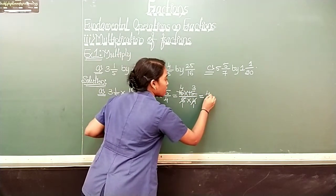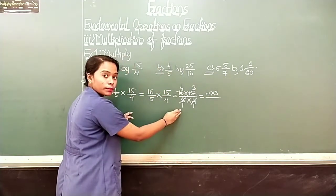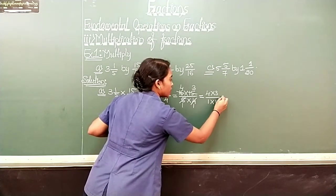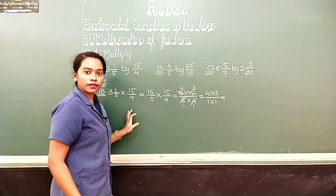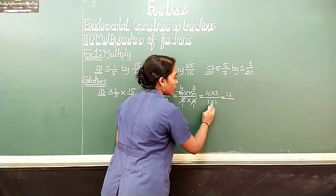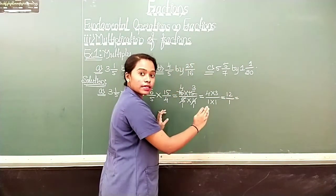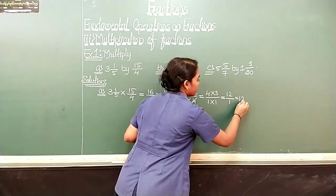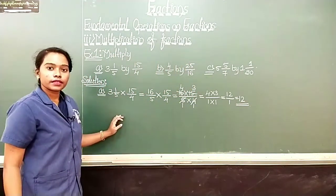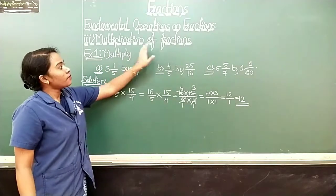What about the denominator? 1 into 1, 1 into 1. Now simplify: 4 into 3, we get 12 by 1 into 1 is 1, which is equal to 12 by 1, which is nothing but 12. So this is our answer. In this way, you have to multiply two fractions.